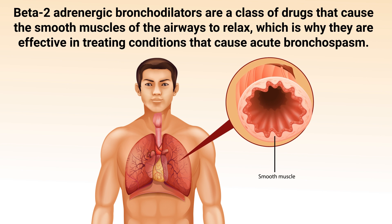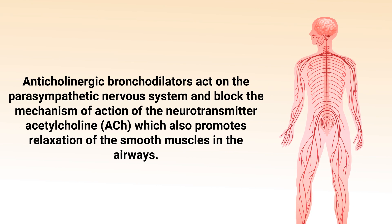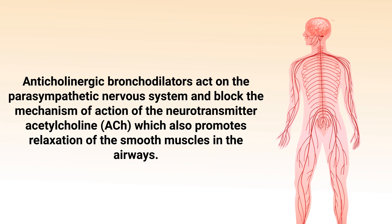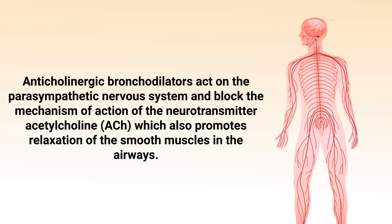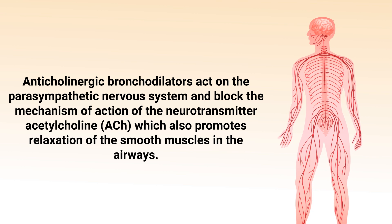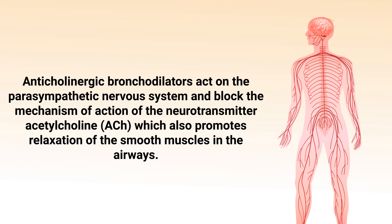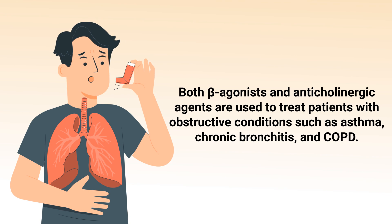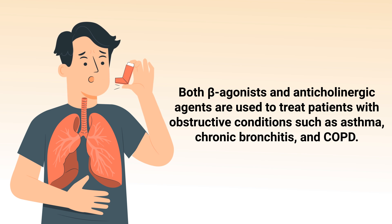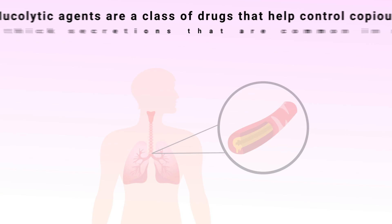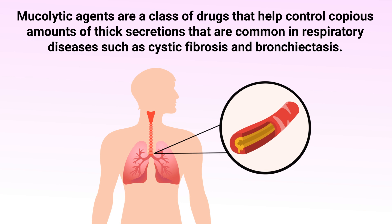Beta-2 adrenergic bronchodilators are a class of drugs that cause the smooth muscles of the airways to relax, which is why they are effective in treating conditions that cause acute bronchospasm. Anticholinergic bronchodilators act on the parasympathetic nervous system and block the mechanism of action of the neurotransmitter acetylcholine, which also promotes relaxation of the smooth muscles in the airways. Both beta agonist and anticholinergic agents are used to treat patients with obstructive conditions such as asthma, chronic bronchitis, and COPD.